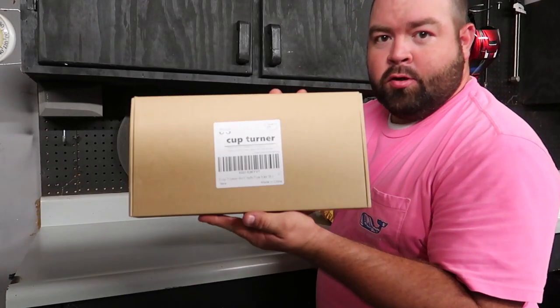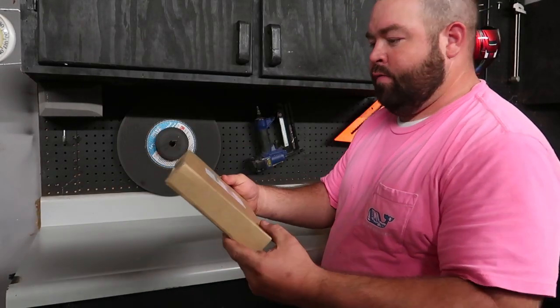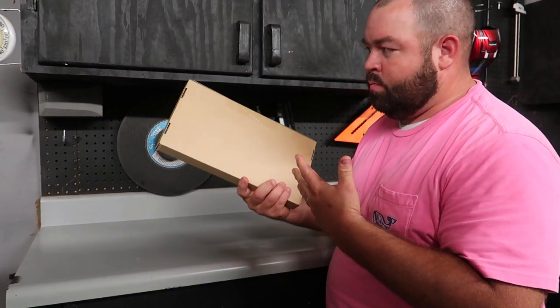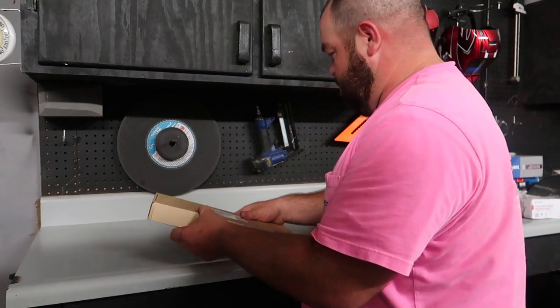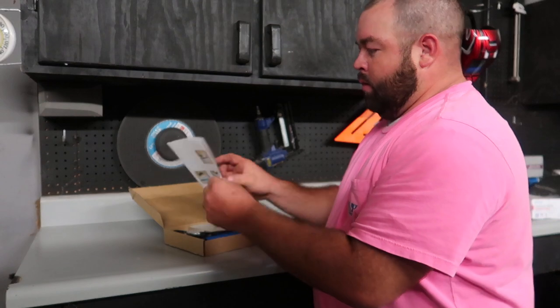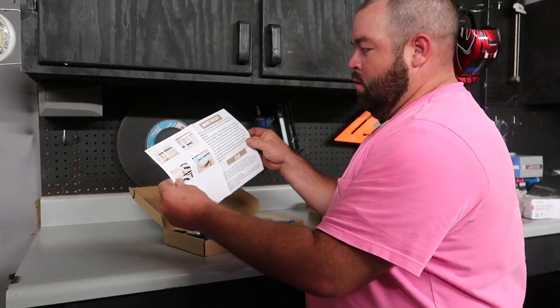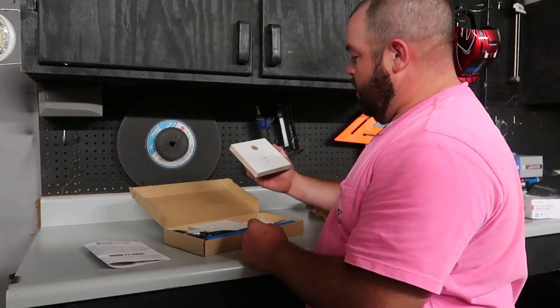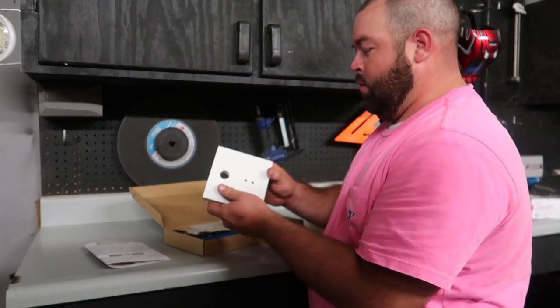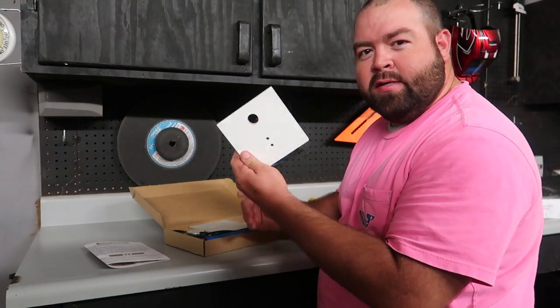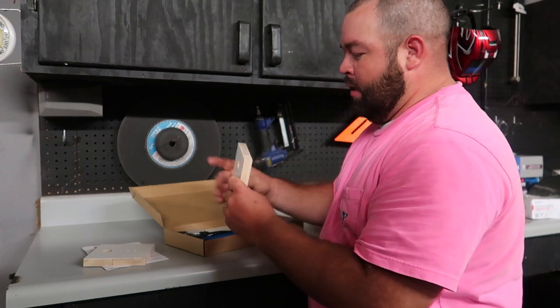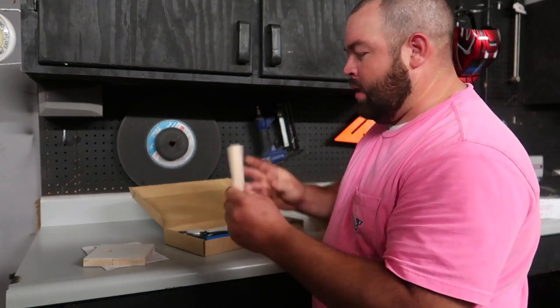So it says Cup Turner on the box itself. I'll place a link in the description where you can find this at, but it was $35. So in the box, the first thing is going to be some instructions. We have two pieces of wood. It's kind of like wood, but it's not. It feels like a laminate coating across the outside of it.